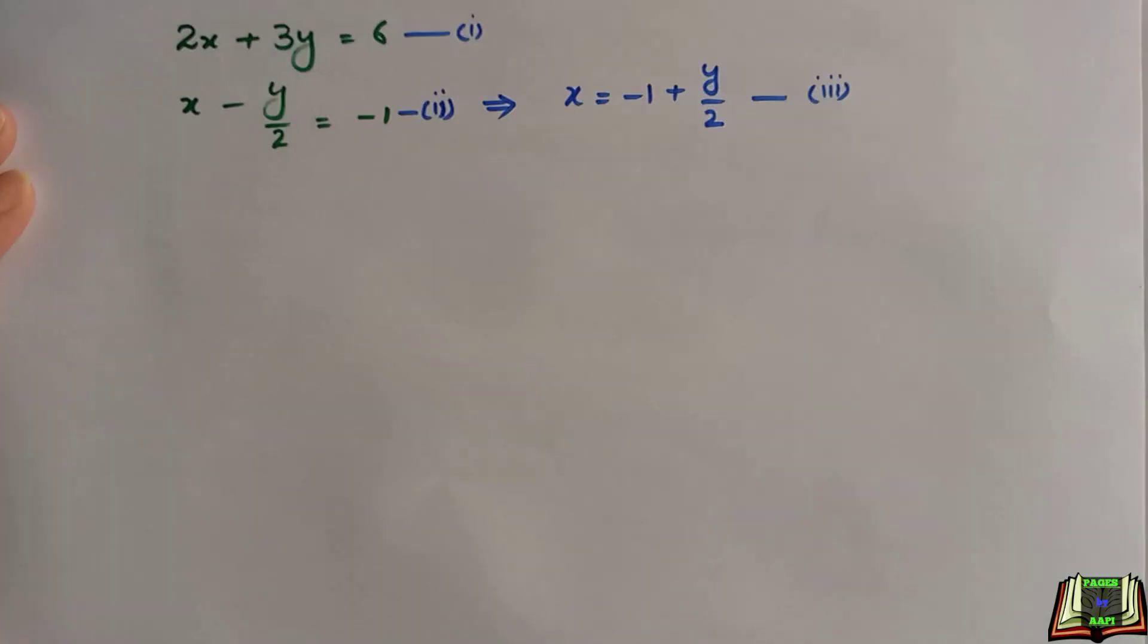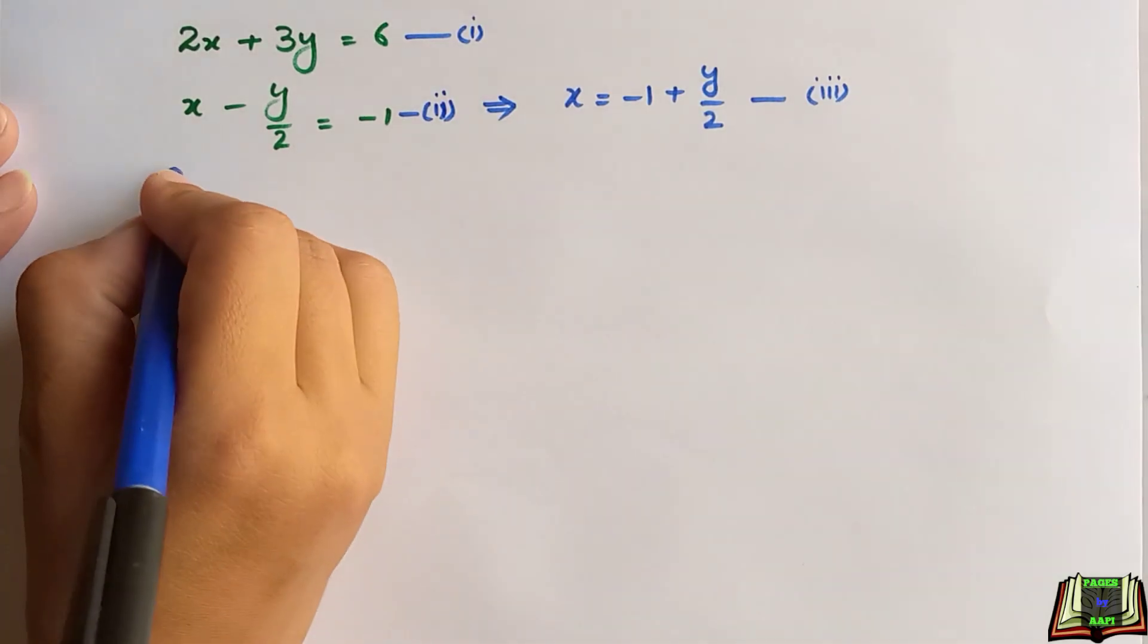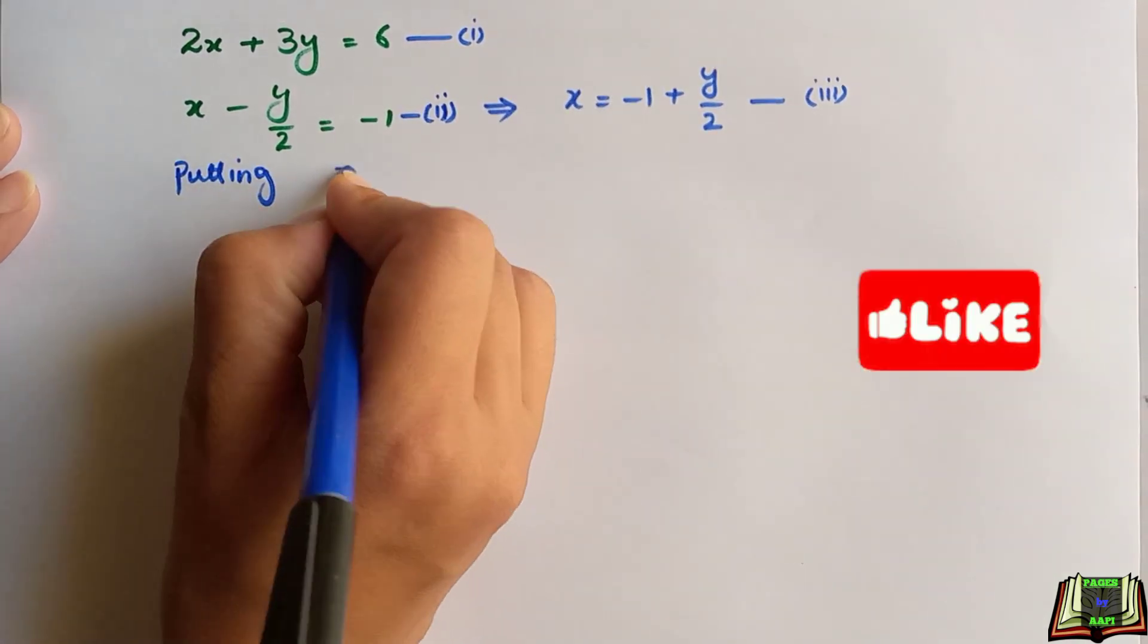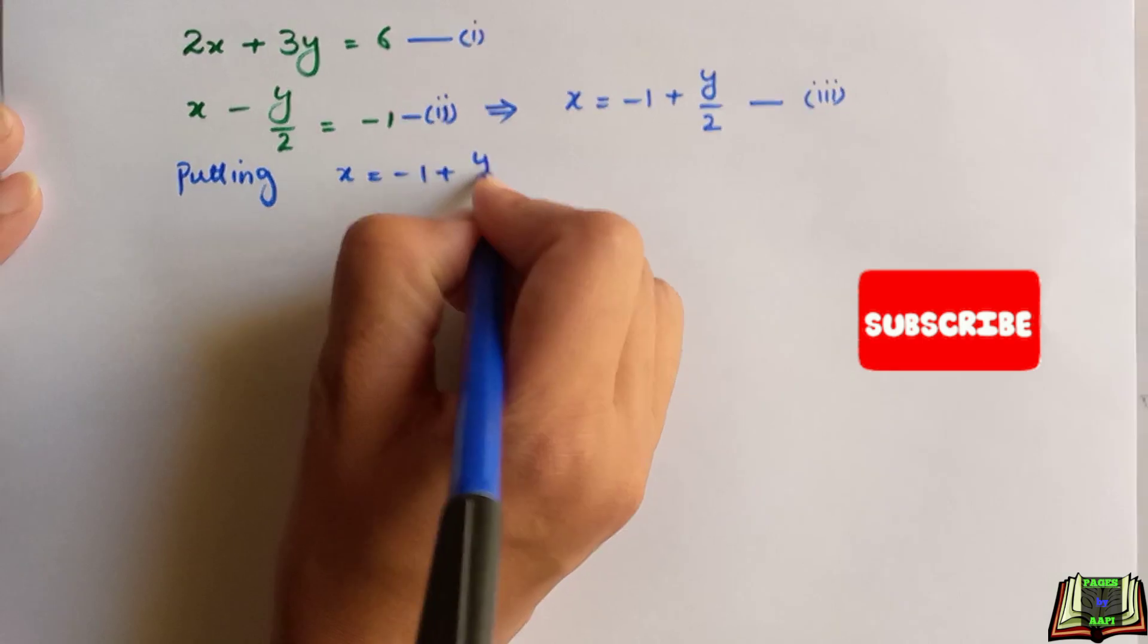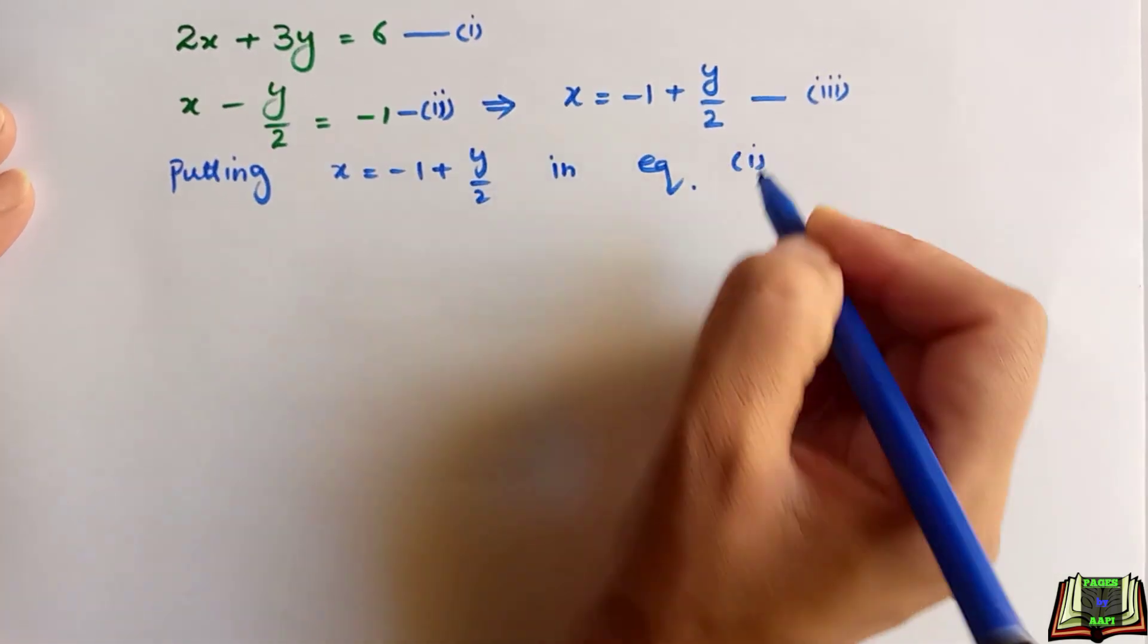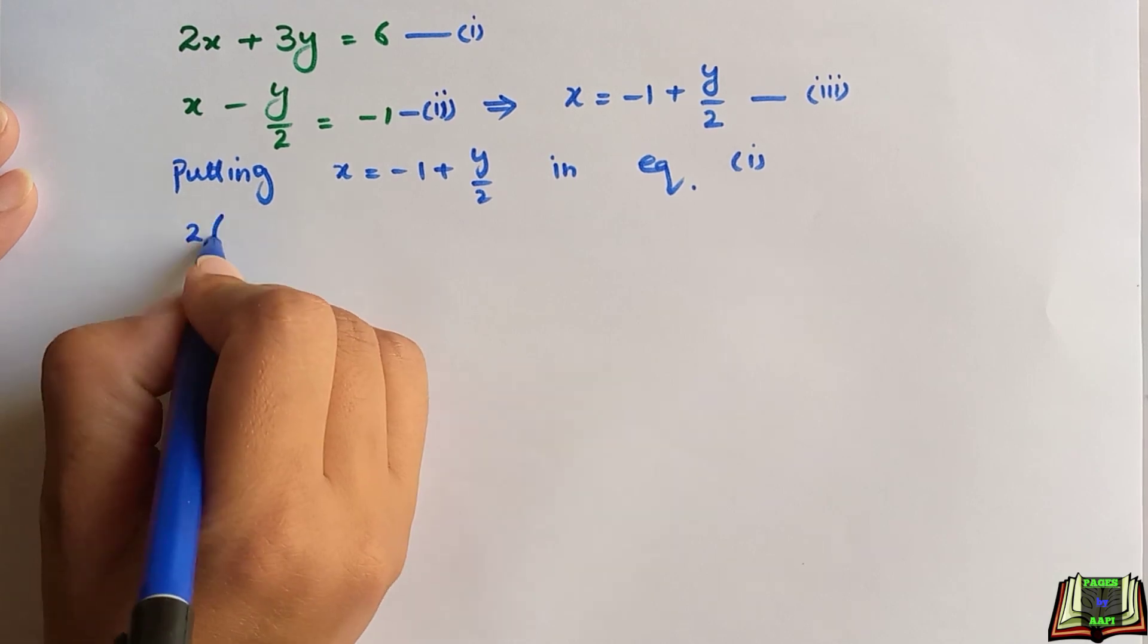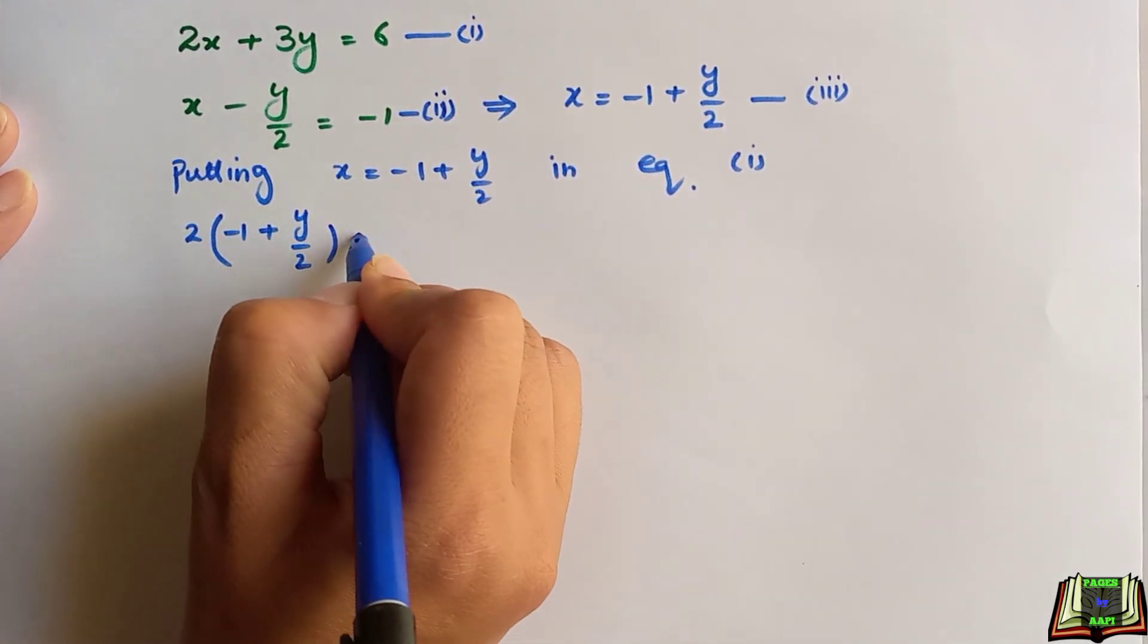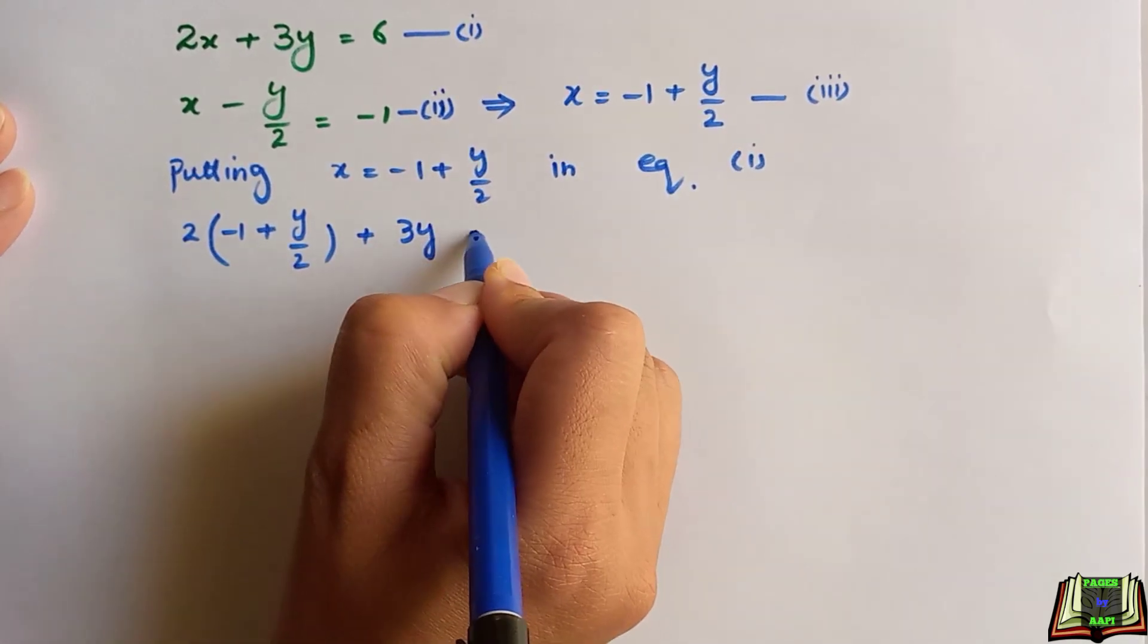Now the value which we get from equation 3, we will put this in equation 1. Putting the value of x in equation 1, we get 2(-1 + y/2) + 3y = 6.